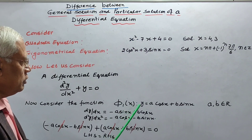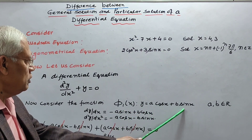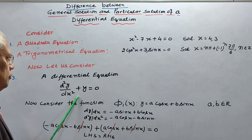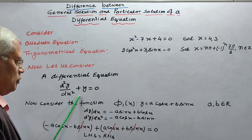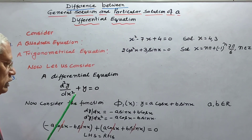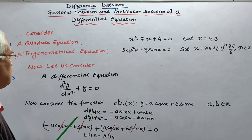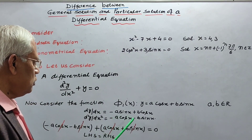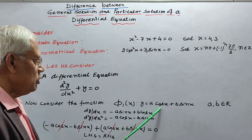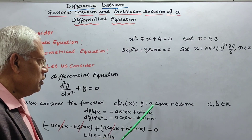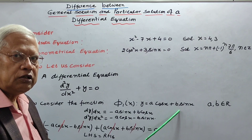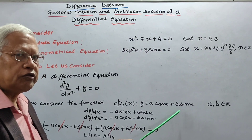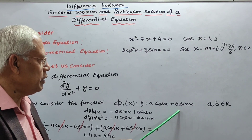So, φ₁(x), that is y equal to a cos x plus b sin x, where a and b are real numbers, is a solution of this differential equation. This solution is called the general solution, because this solution contains a and b, which are arbitrary constants, or you can say they are parameters.